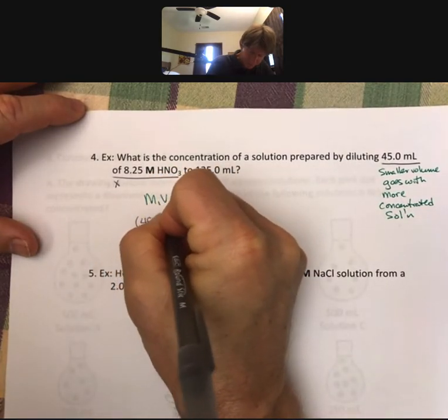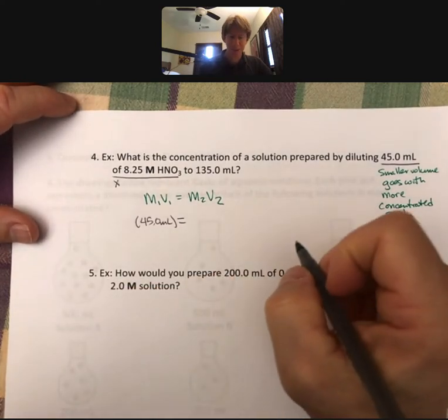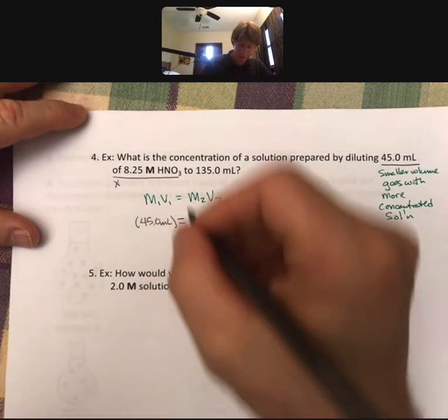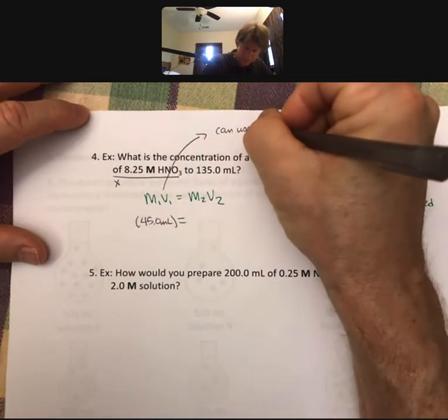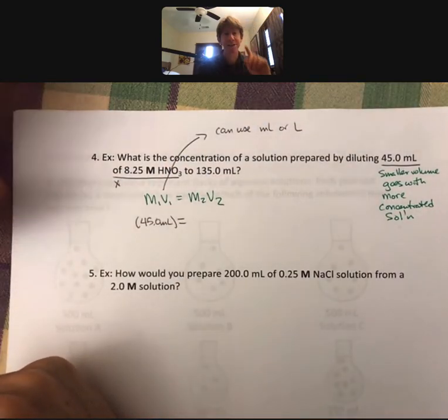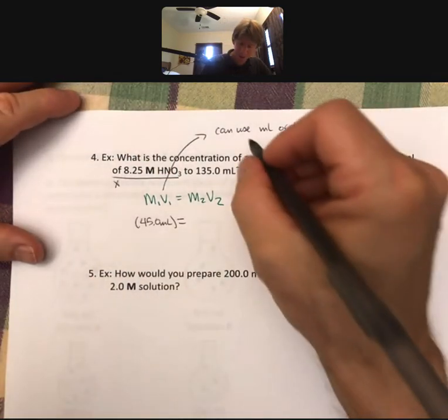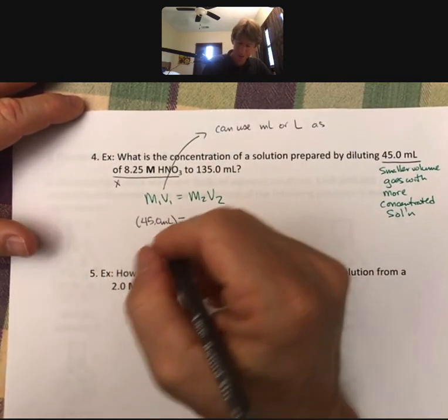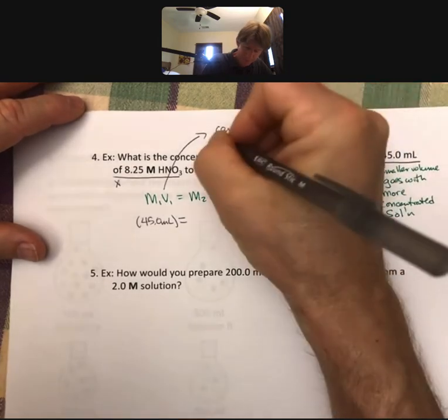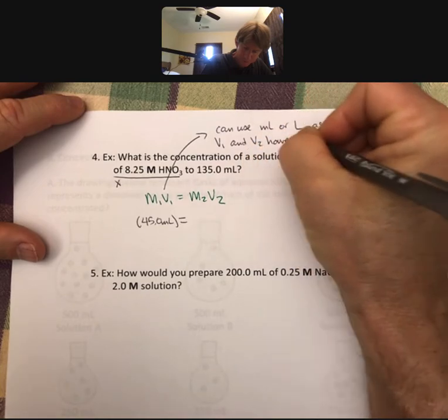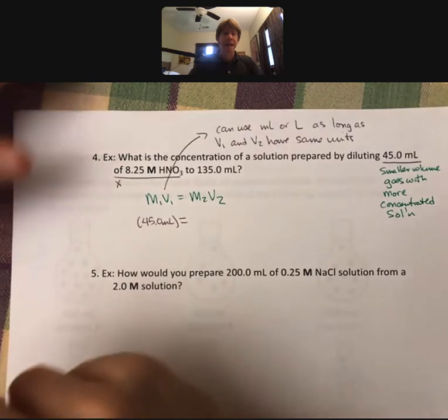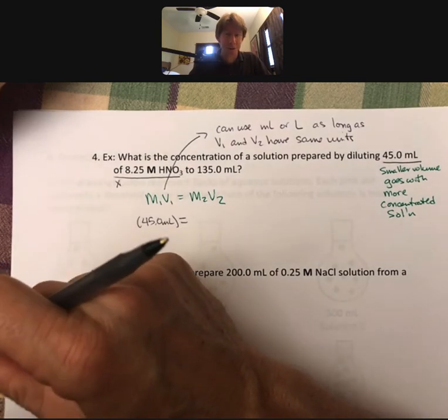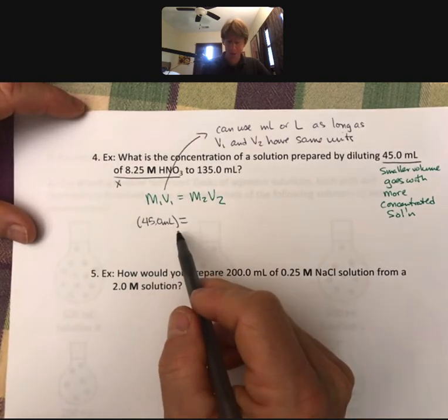One thing I will point out is that when you use this formula, you can use milliliters or liters as volume units, as long as V1 and V2 have the same units. In fact, you can use other sets of units as well, but in chemistry class, those are typically the only two sets of units that we will use. So it is okay that I'm going to use milliliters here.